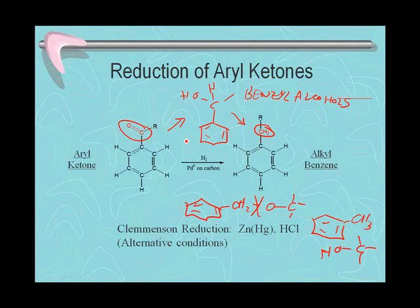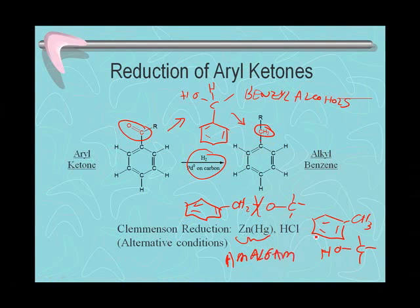In addition to the hydrogenation conditions shown, we can use an alternative set of conditions to reduce the carbonyl group to a CH2 group. This involves using zinc amalgam — zinc mixed with mercury — and acid. Any metal that reacts with mercury forms a material referred to as an amalgam, which was used in dentistry to create fillings. So, with zinc amalgam and acid, we can reduce the carbonyl group to a CH2 group.